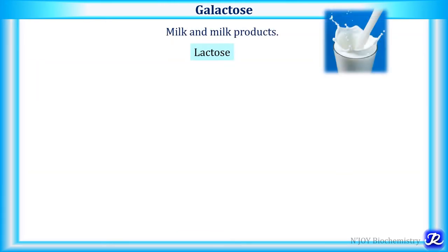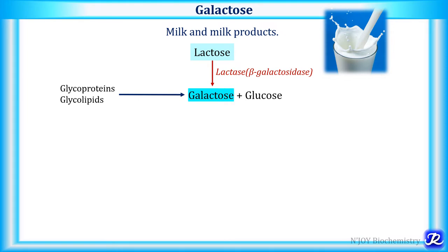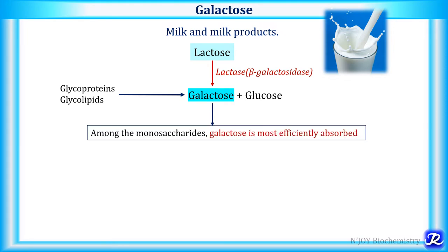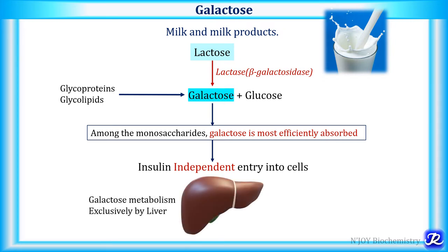The sources of galactose are milk and milk products which contain lactose. By the action of lactase enzyme, also called beta-galactosidase, lactose is broken down into galactose and glucose. Galactose can also be derived by lysosomal degradation of glycoproteins and glycolipids. Among the monosaccharides, galactose is most efficiently absorbed and its entry inside the cell is insulin independent. Galactose metabolism mostly occurs exclusively in the liver cytosol, and that's why the galactose tolerance test is done to assess the functional capacity of the liver.